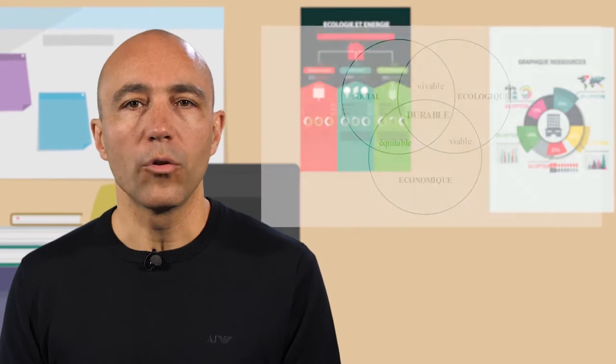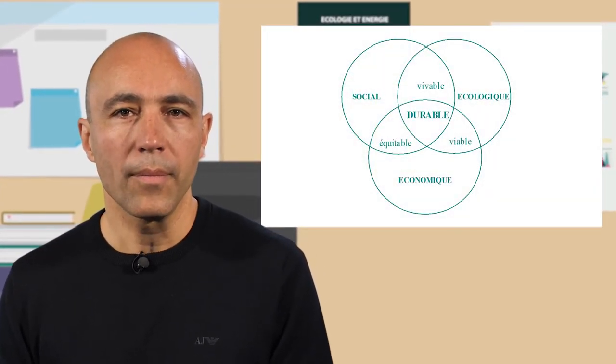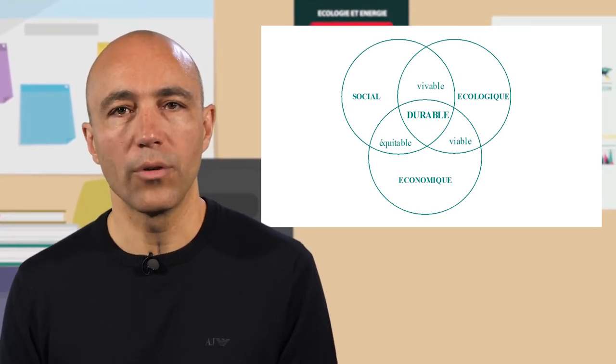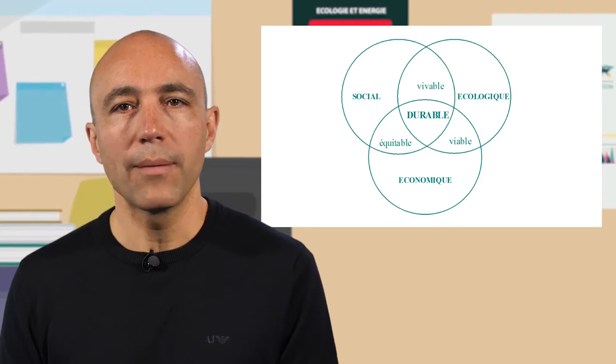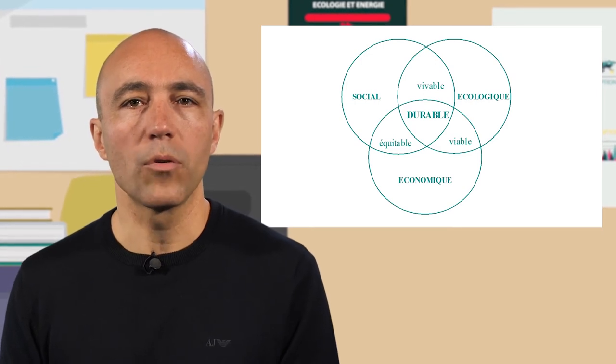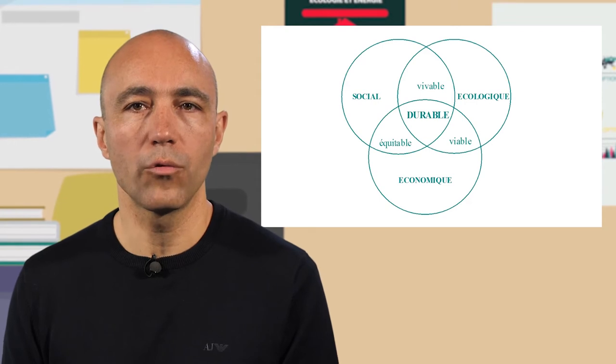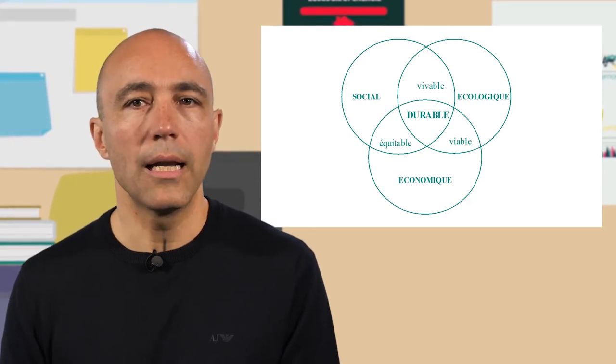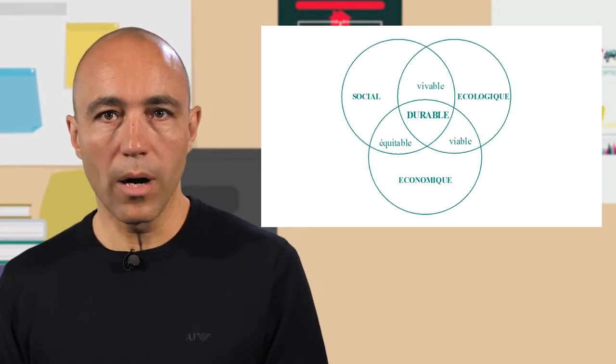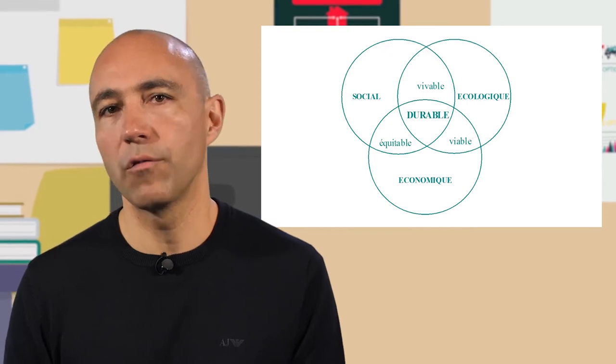La représentation du développement durable elle-même peut être considérée comme un modèle. Un modèle programmatique, puisqu'il définit davantage un idéal qu'une réalité observable, mais un modèle qui s'appuie sur les trois dimensions que ces concepteurs ont considérées comme fondamentales pour penser un développement humain qui ne prétérite pas le bien-être des générations futures : la société, la nature et l'écologie. À l'intersection de ces trois sphères, des lois définissent les notions de développement équitable, vivable, viable et enfin durable.